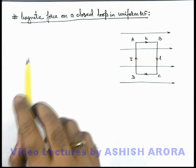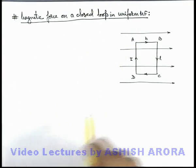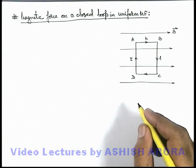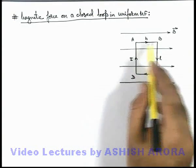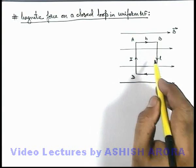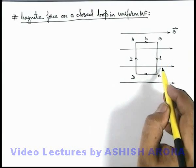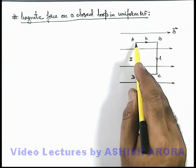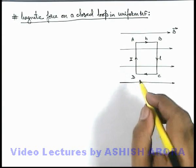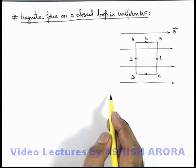Now let's study the magnetic force on a closed loop in a uniform magnetic field. Here you can see a uniform magnetic field of induction B vector, in which a closed loop ABCD carrying a current i is placed, in such a way that its length l is perpendicular to magnetic induction and breadth b is parallel to the direction of magnetic induction. In this situation, if we calculate the force on different segments of this loop: